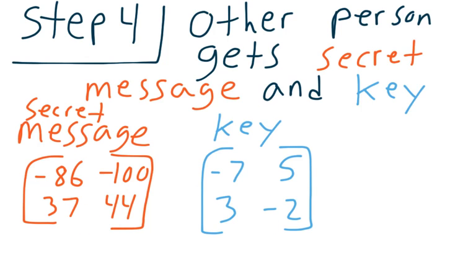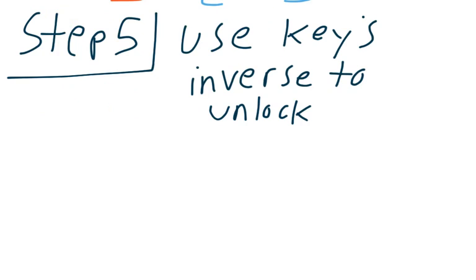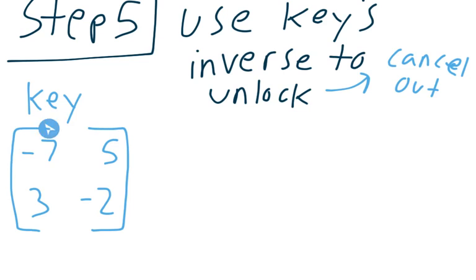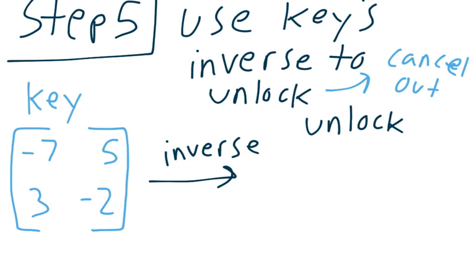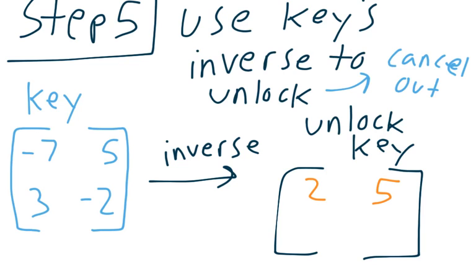So that's step 5. So step 5, use the key's inverse to unlock. Just like the last video, the inverse and the regular matrix will cancel out and put the matrix back to normal. That's what this is doing. We're going to cancel out with the inverse and get back to the original message. So here is the key we got originally. I just have to find the inverse of that, which I can do by hand, or I can just save time and do it on my calculator. And when I do that, here is the unlock key. So the inverse of the original key. If you type it in and find the inverse, you get this. 2, 5, 3, 7. So this is my unlock key. This will put the message back to where it should be.